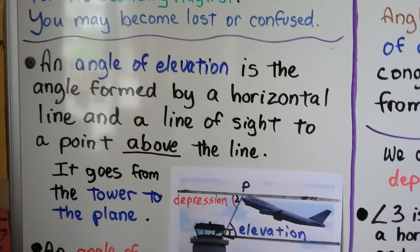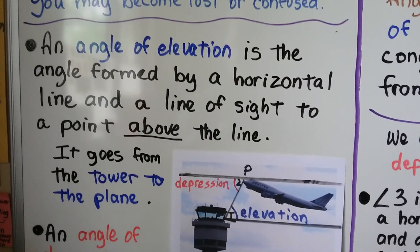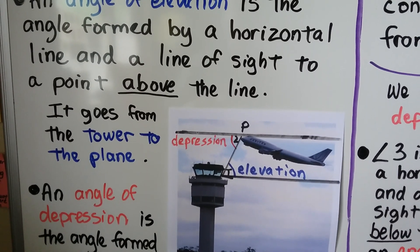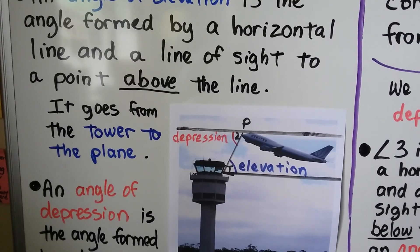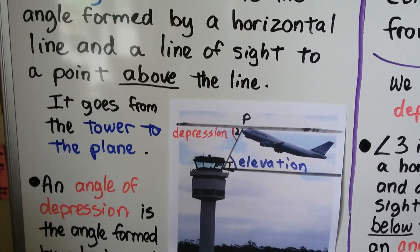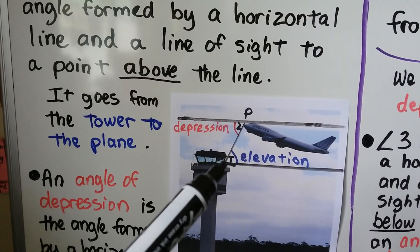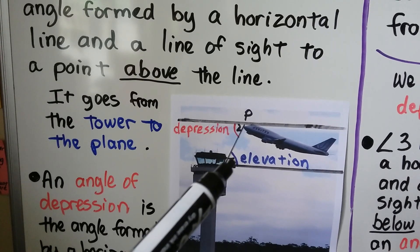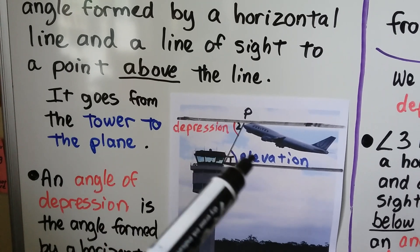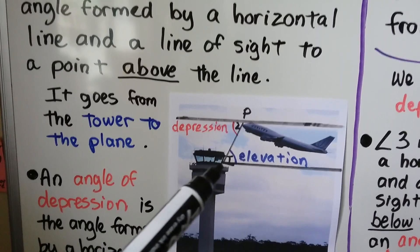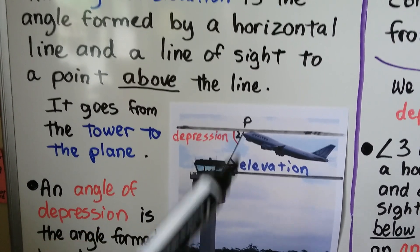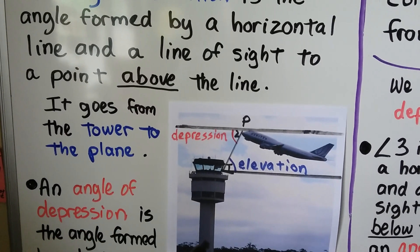An angle of elevation is the angle formed by a horizontal line and a line of sight to a point above the line. So the angle of elevation goes from the tower to the airplane — it's going up to look above at the airplane.